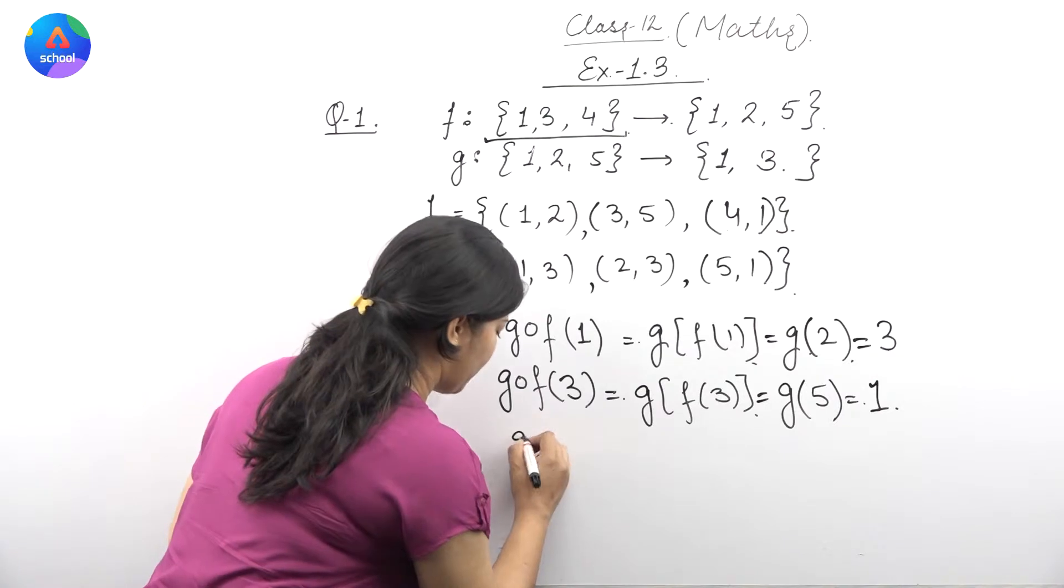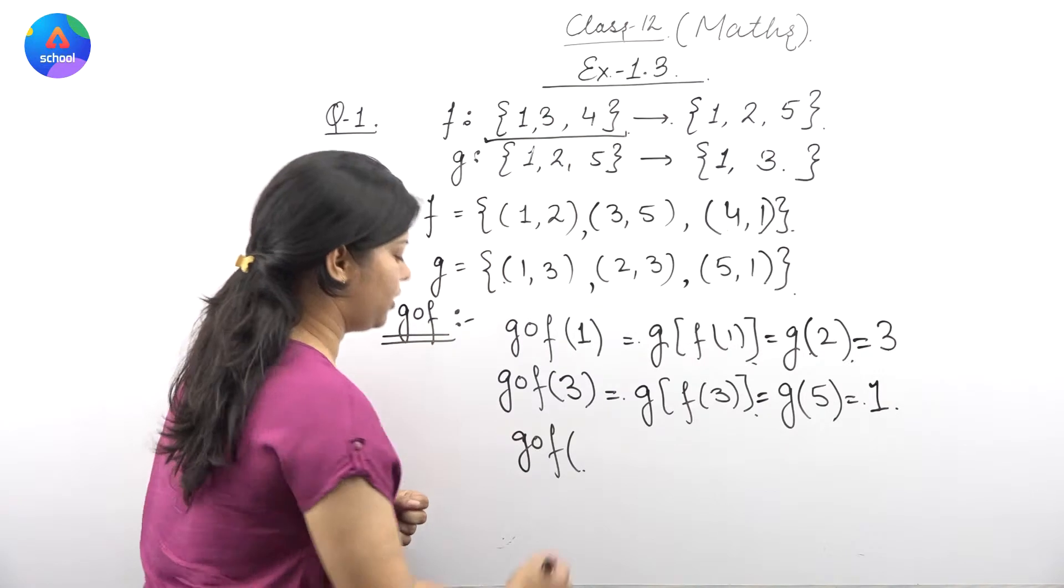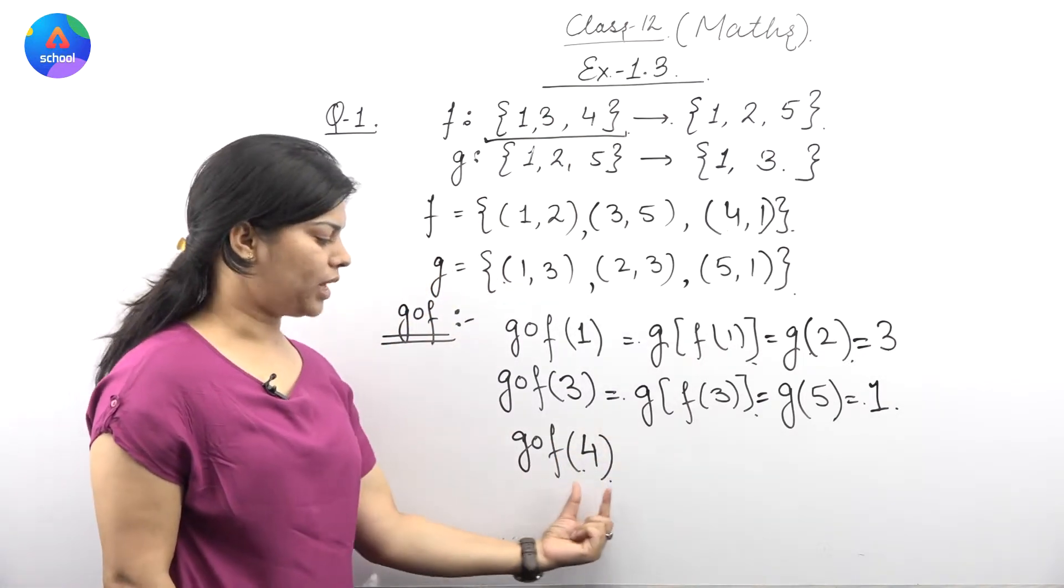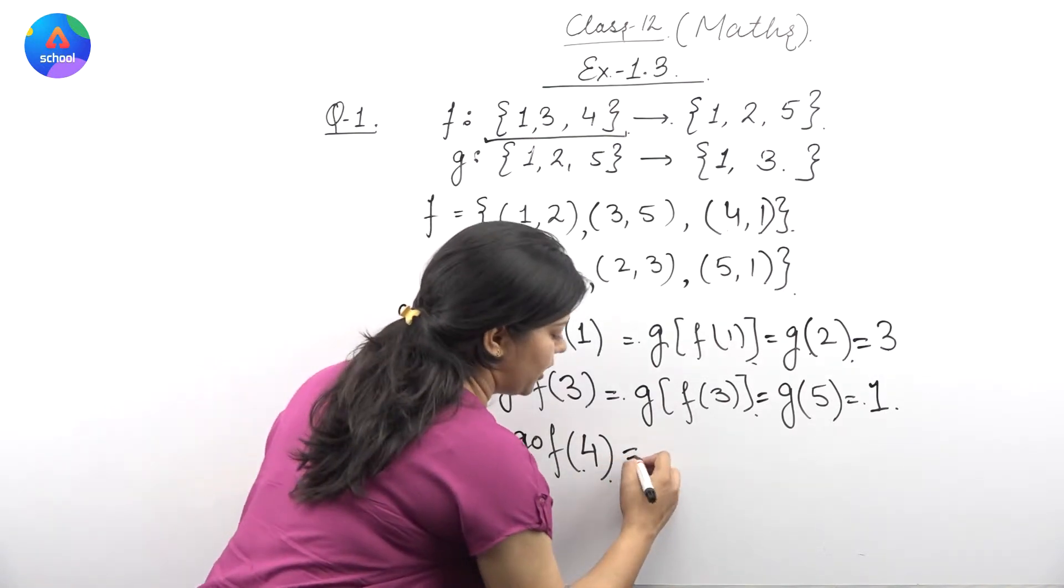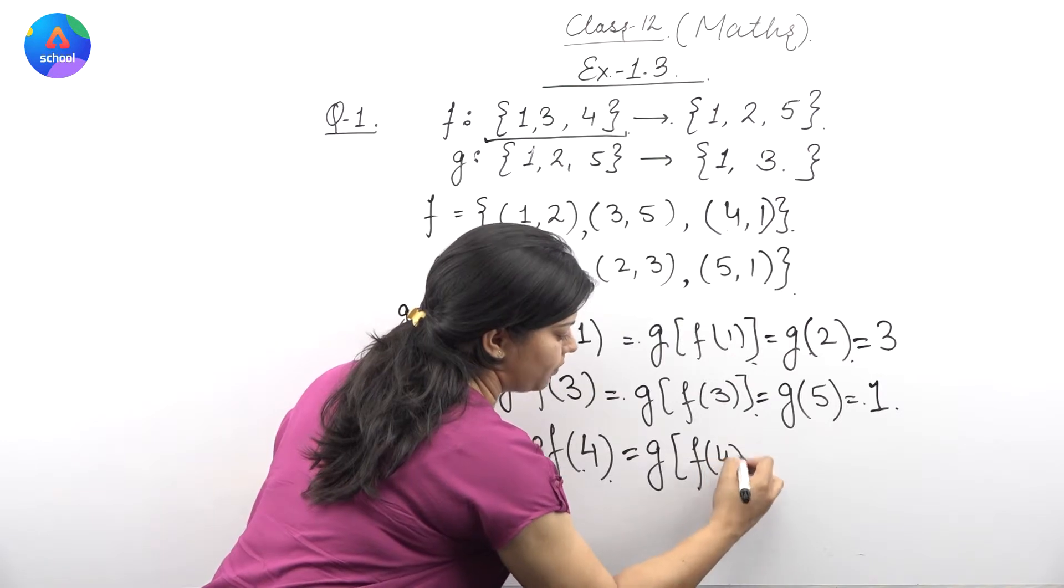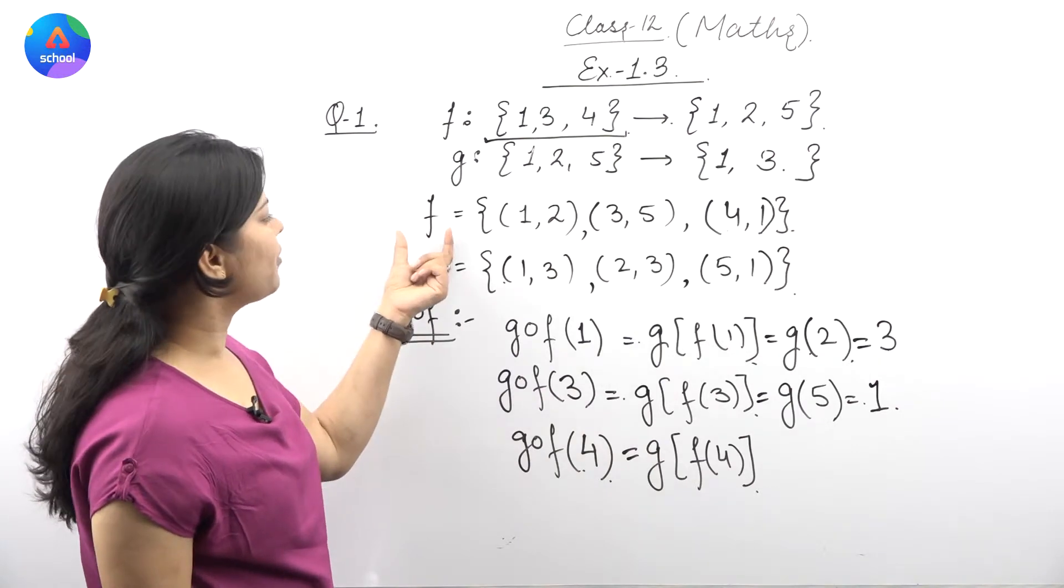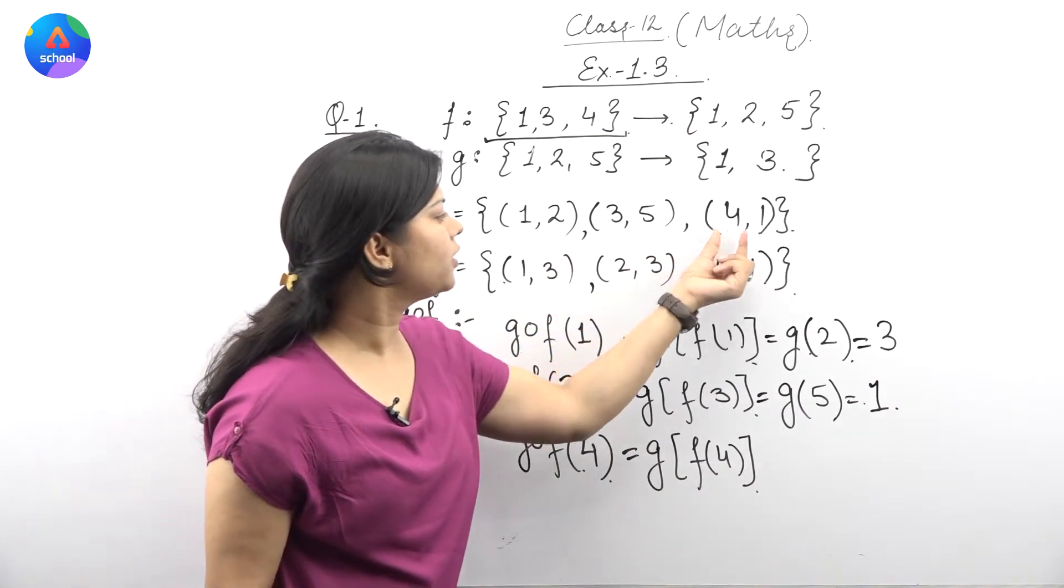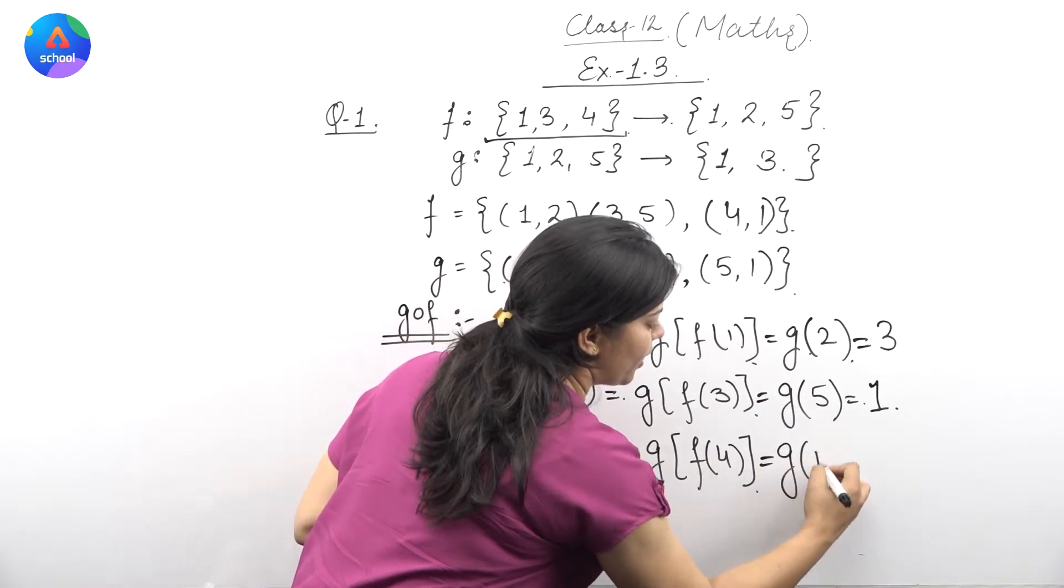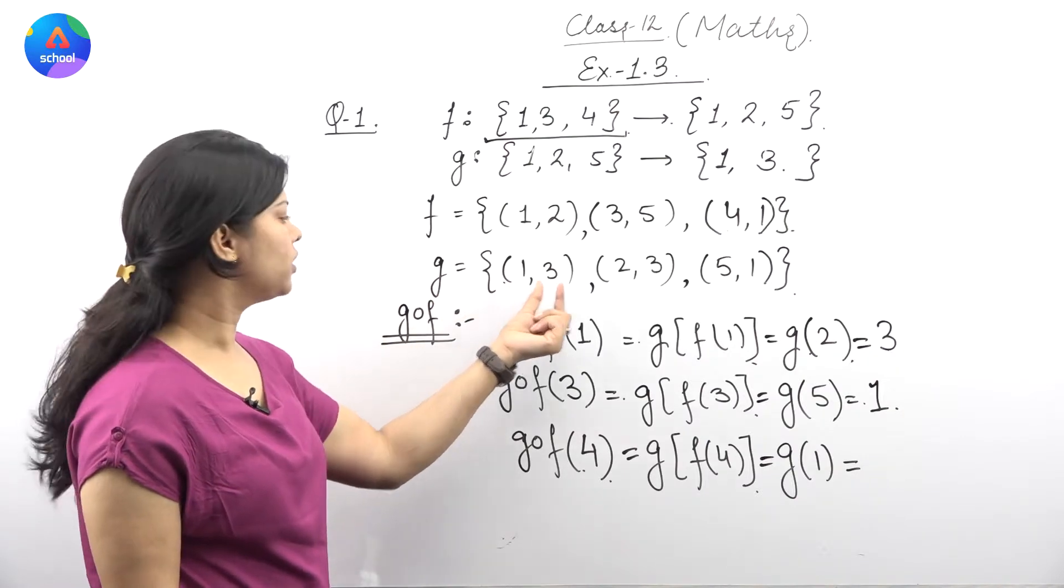After that, g∘f for the next element from F's domain, which is 4. So g∘f(4): we need to find f(4). The image of 4 under F is 1, so g(1). g(1), the image of 1 under G, is 3.